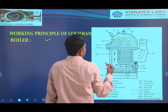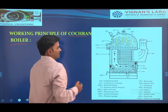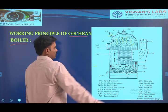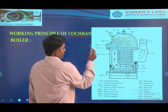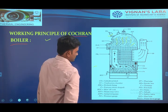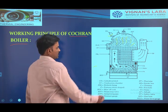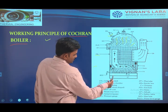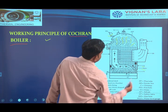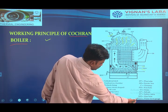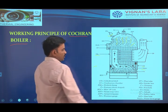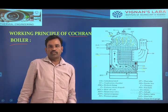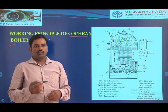We are collecting the steam through the steam stop valve. With the help of the pressure gauge, we are indicating the generated steam pressure. We are using a water level indicator in order to indicate the level of water inside the boiler. Through the smoke box, we are collecting the hot flue gases and introducing them into the chimney and out to the outside atmosphere.